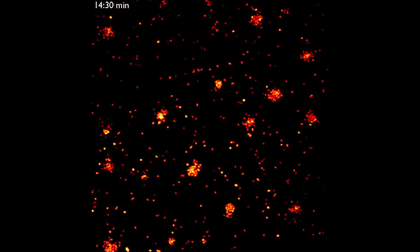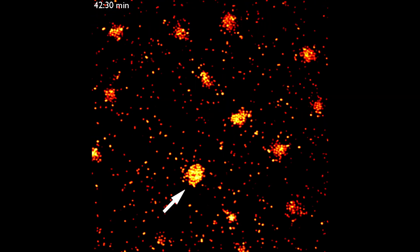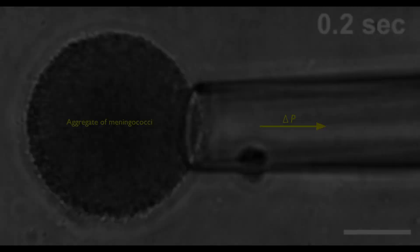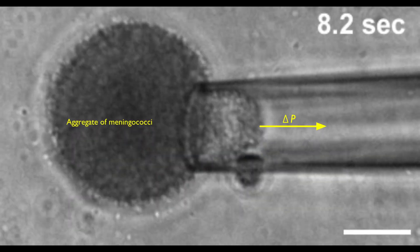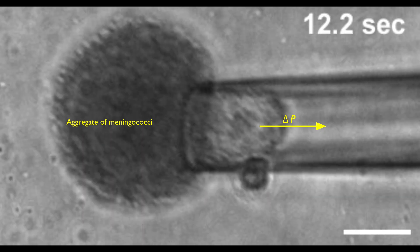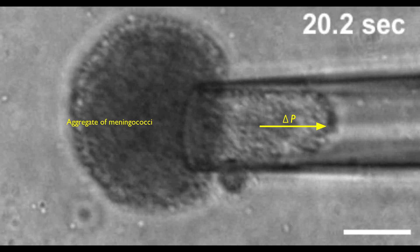Surprisingly, meningococcus combines efficient aggregate formation to resist the bloodstream and a liquid-like behavior. Aggregates in liquid suspension are spherical, very dynamic, and can rapidly fuse together, just like oil droplets in water. Their viscosity is similar to honey, as measured in this pipette aspiration experiment, so bacterial aggregates behave as a viscous fluid material.